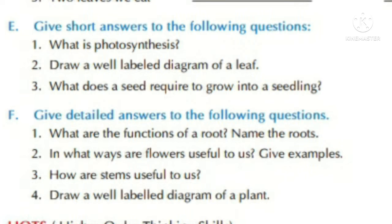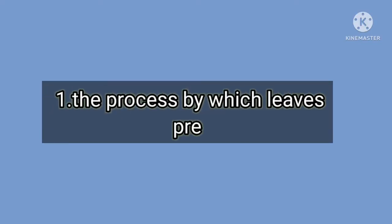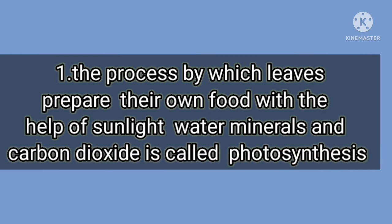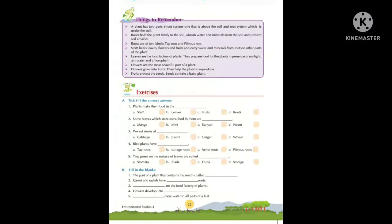Section E — Give short answers. Question one: what is photosynthesis? Answer: the process by which leaves prepare their own food with the help of sunlight, water, minerals, and carbon dioxide is called photosynthesis.